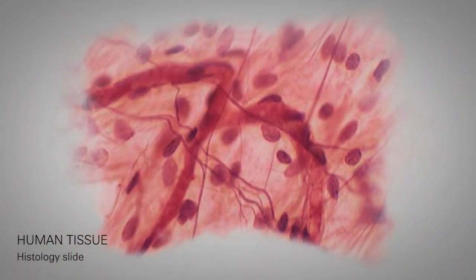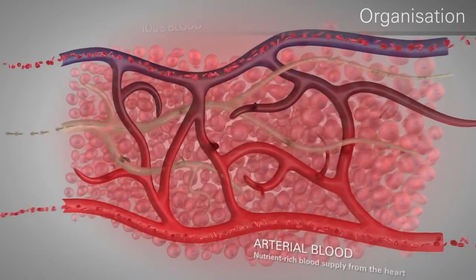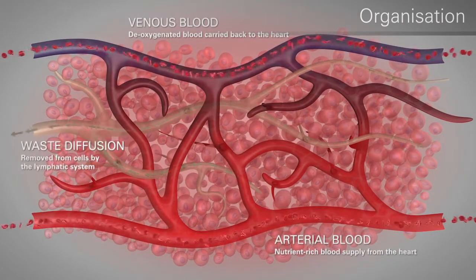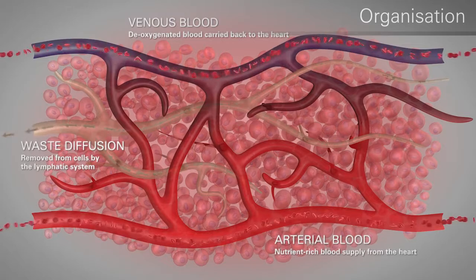Looking at a section of human tissue, the complex three-dimensional structure and organization critical for cell growth and function is immediately apparent. Networks of capillaries deliver nutrients to cells, while efficient removal of waste products is achieved through the lymphatic system.